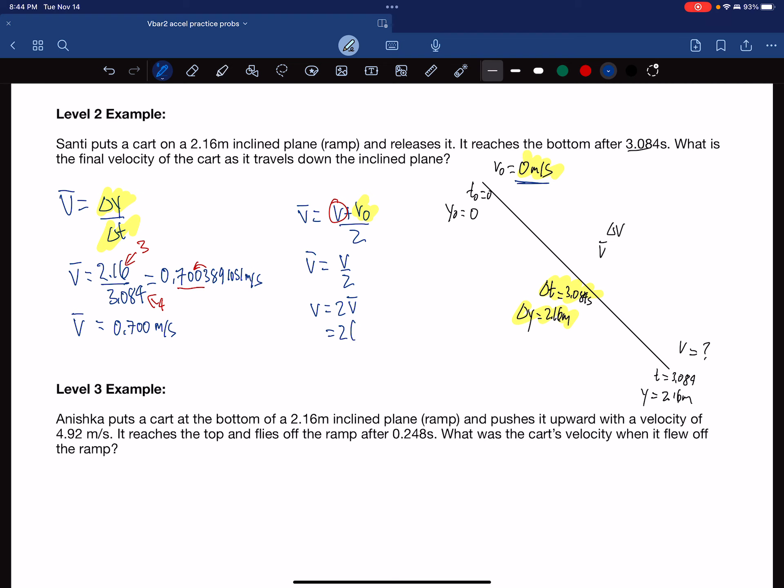And the average velocity, we always use the unrounded, is 0.7003891051. And when we multiply that by 2, we get 1.40077821 meters per second.